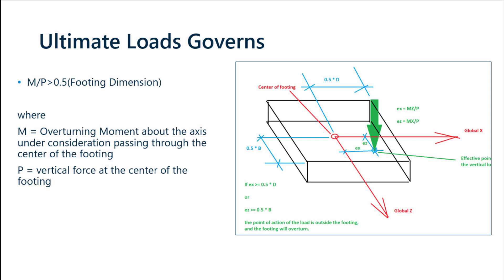Until now we discussed conditions where service load cases govern footing sizes, which is the general practice. Now we discuss situations where ultimate load cases govern. Factored or ultimate load combinations are used for final dimensions only if M divided by P is greater than 0.5 times the dimension calculated using service loads for either direction — where M is the overturning moment and P is the vertical force at the center of the footing. If EX or EZ is greater than 0.5 times D or 0.5 times B, the point of action falls outside the footing and it will overturn. Bending moments and shear forces for factored loads can only be calculated if M/P is smaller than 0.5 times the footing dimension, so the program increases the footing size to meet this requirement.